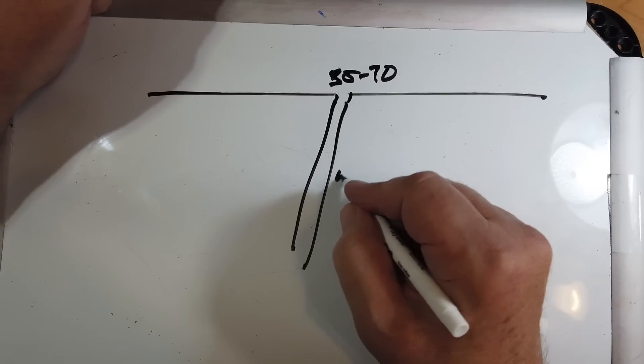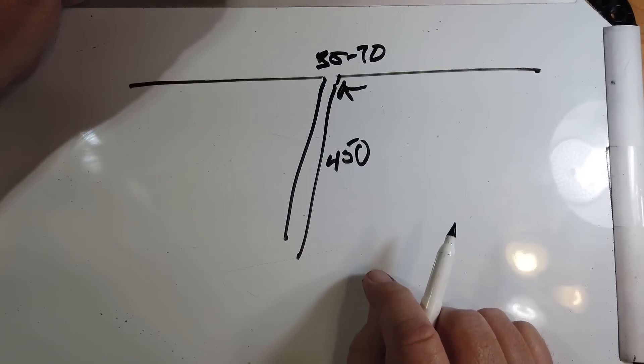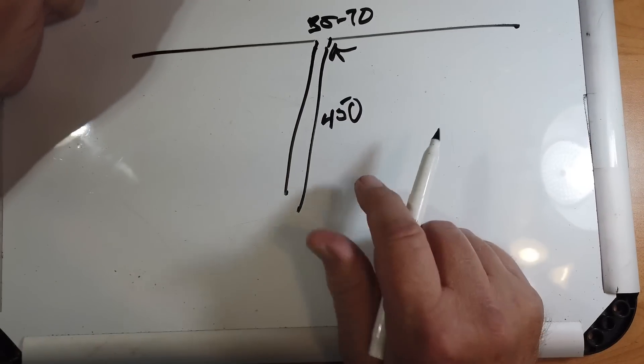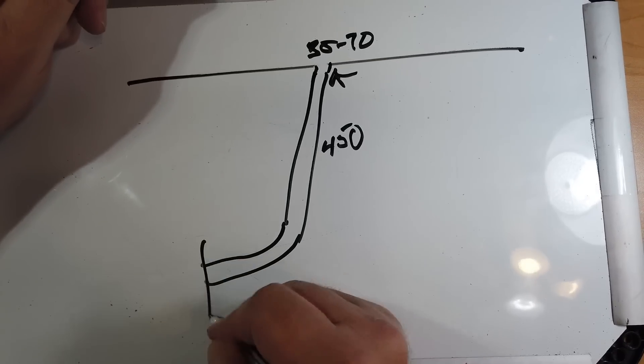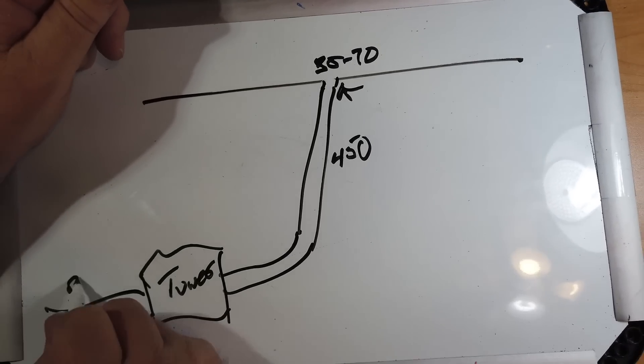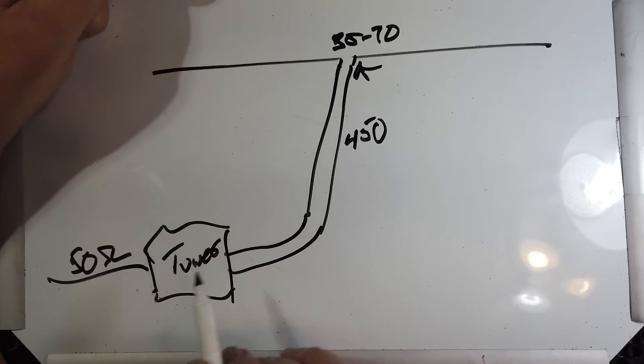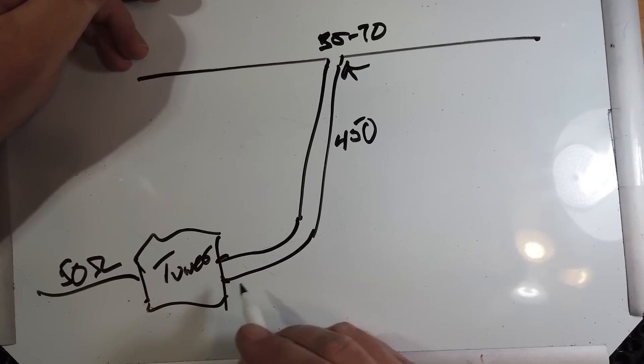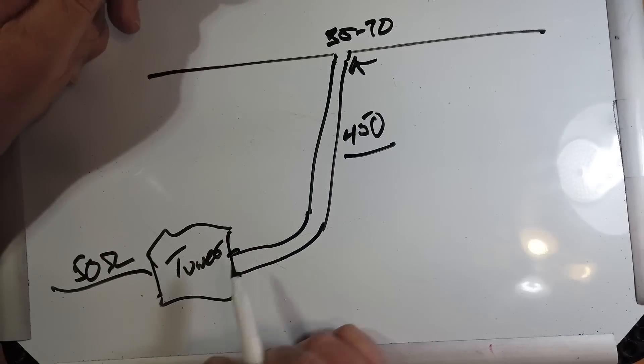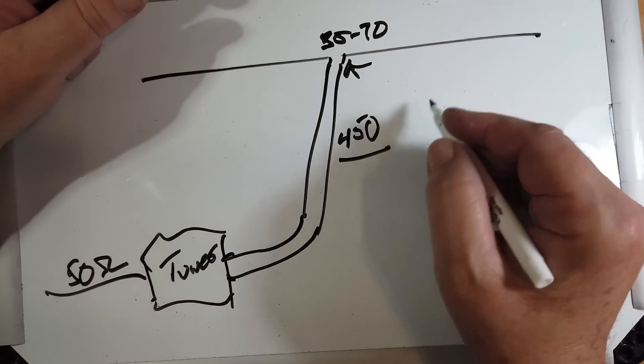Now, if you feed this with ladder line or window line, 450 ohms, obviously there's an issue right there. You need a 9 to 1 balun right there, and then you bring this down to a tuner and 50 ohms out to the radio. Most tuners have a connection on the back for open wire line.